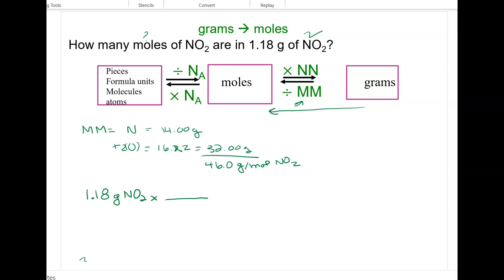I want to get rid of the grams, and I want moles. So that means I'm going to take my 46.0 grams of NO2, and I'm going to put that in the denominator, and moles of NO2 in the numerator. So grams of NO2 will cancel, and I'll have moles of NO2, which is what I wanted.